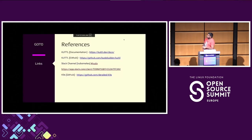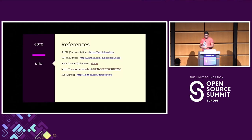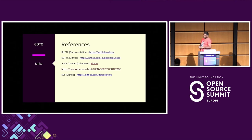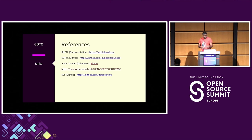These are the references: Cuttle docs, Cuttle GitHub reference, a specific Slack channel on the Kubernetes Slack called 'kudo' (part of Kudo Builder) where you can post questions, and another open source tool we've used — K9s — at GitHub D-Rail K9s.